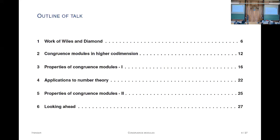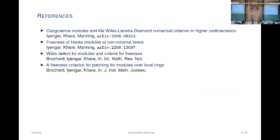Here's the outline of the talk. I'll begin with some background from the work of Andrew Wiles and Fred Diamond. Then the next two bits are some commutative algebra, the main part of the talk, and then some applications to number theory. Time permitting, I'll return to the subject of congruence modules and say a bit more about the commutative algebra behind it. The references are four papers on the archive, which you can ignore for now.